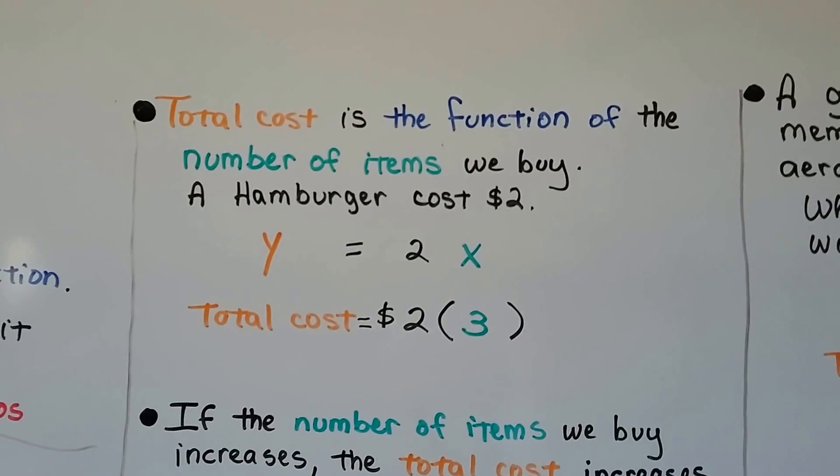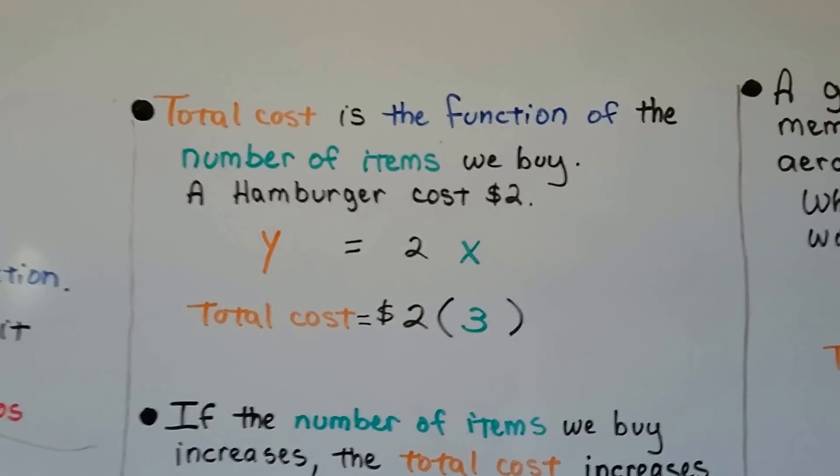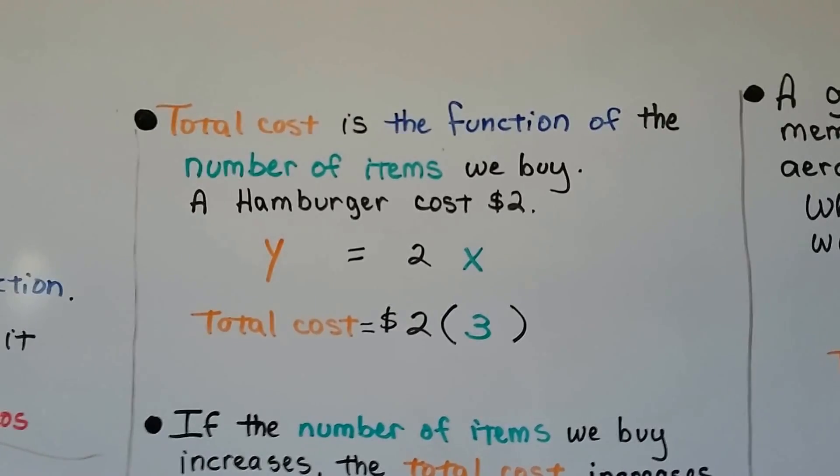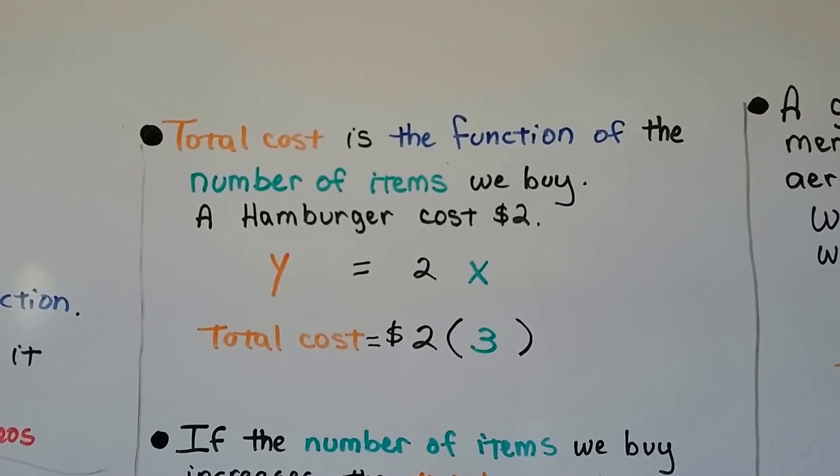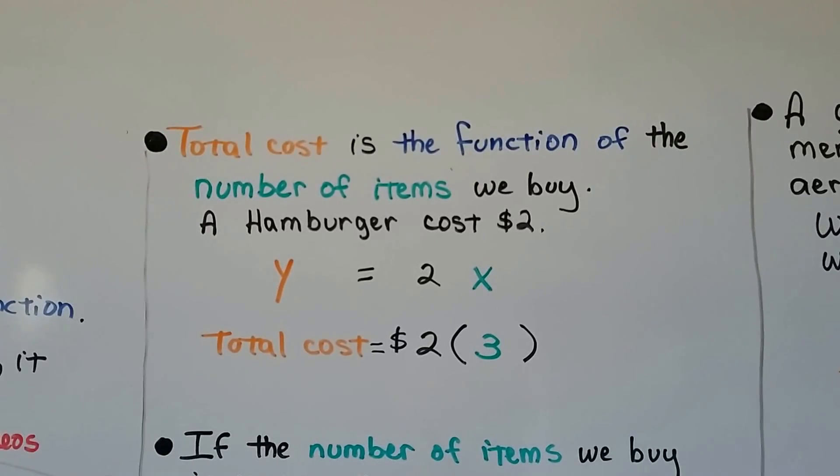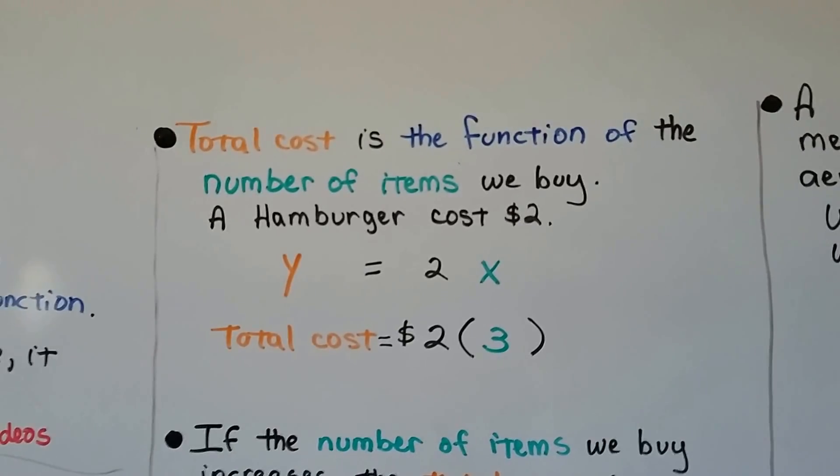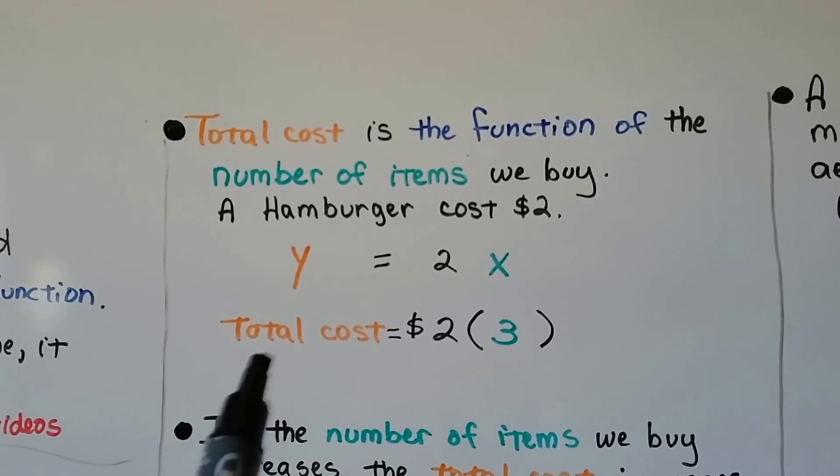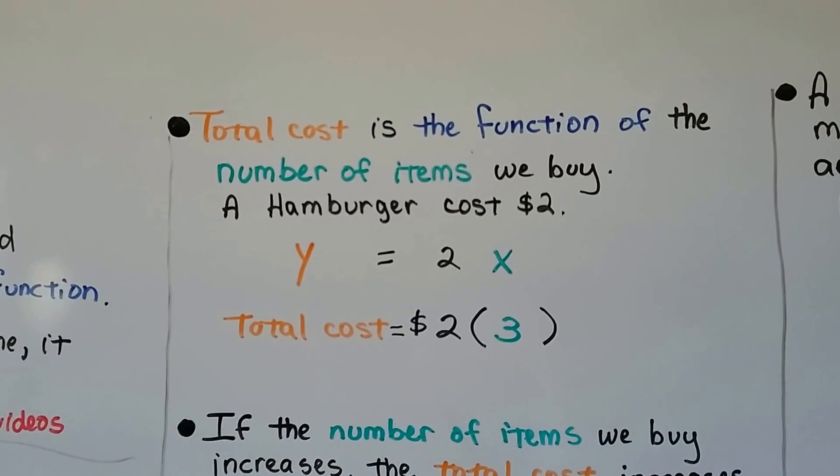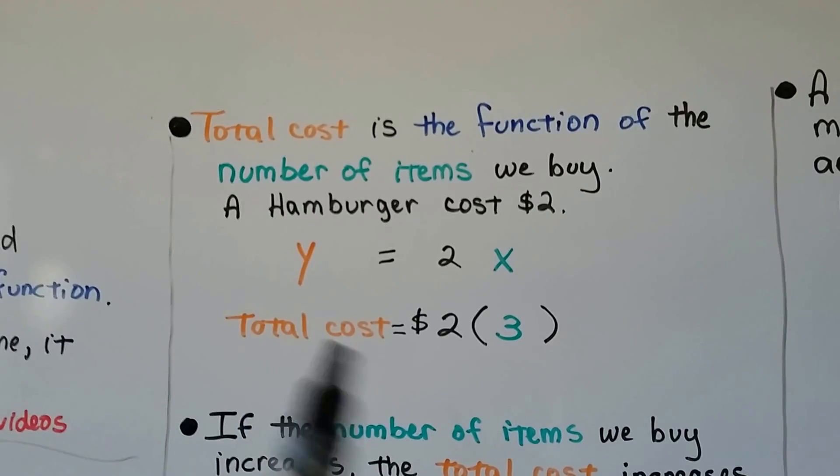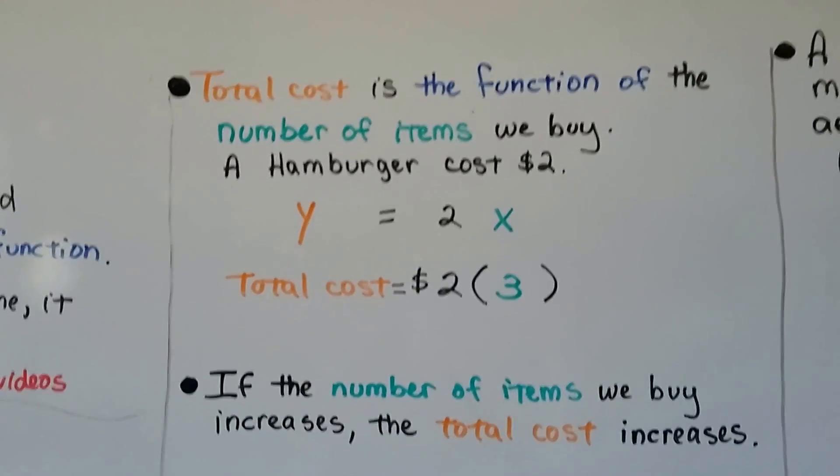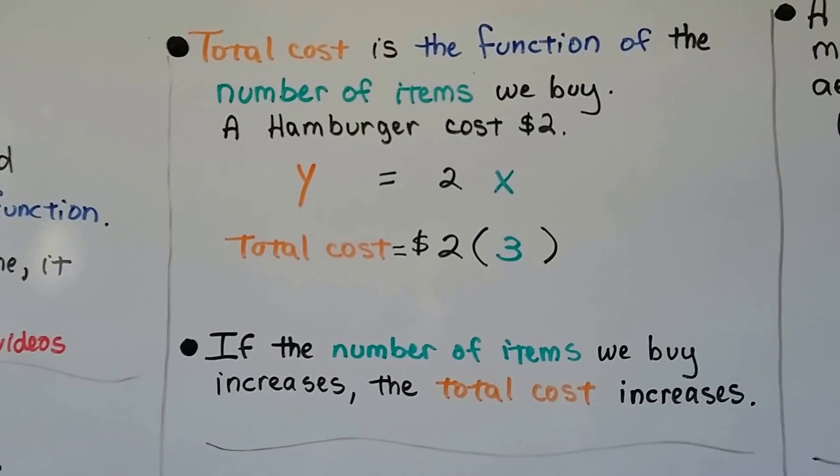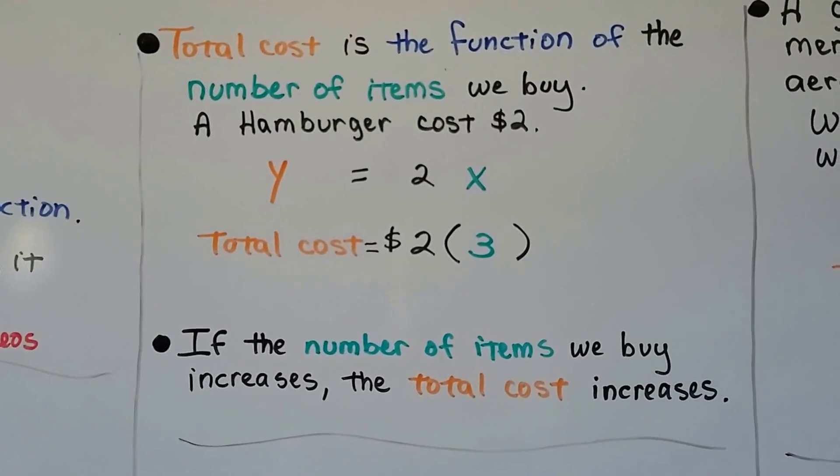It even has a slope, doesn't it? Total cost is the function of number of items we buy. If a hamburger costs $2, depending on how many hamburgers we buy is going to affect how much we owe with the cashier. If we get 3 hamburgers, then the total cost is going to be 6. If we buy 1 hamburger, then the total cost will be 2. If the number of items we buy increases, the total cost increases. That's a function.